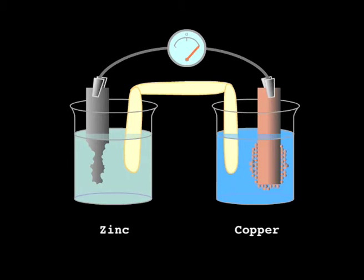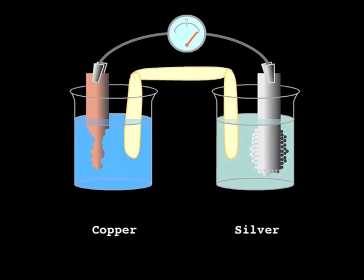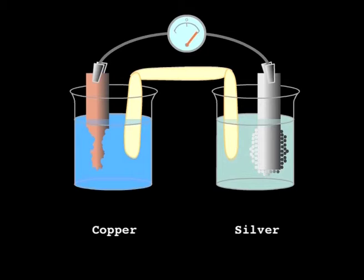What does all this mean? In the first cell, copper and silver, we see that silver ions are the stronger oxidant. They took electrons from copper. So, if we rank the two half-reactions in order of oxidant strength, silver ions rank above copper ions.